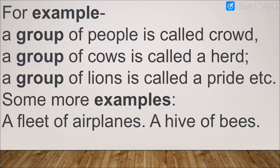Examples: a group of people is called a crowd — like when you go to the market and see people all together. A group of cows is called a herd. A group of lions sitting together is called a pride. Then we have a fleet of airplanes and a hive of bees.